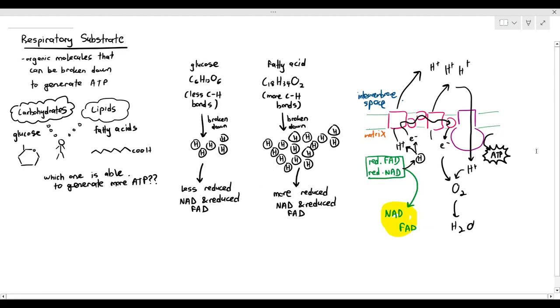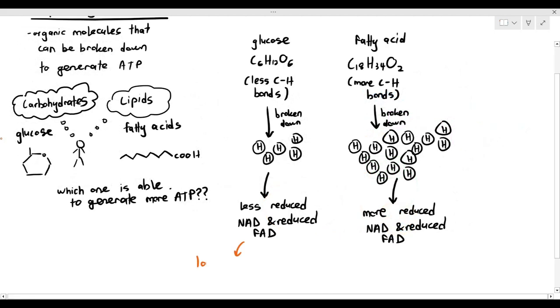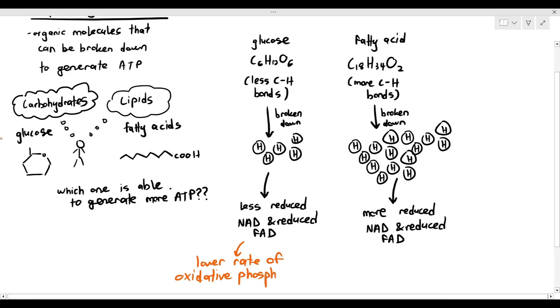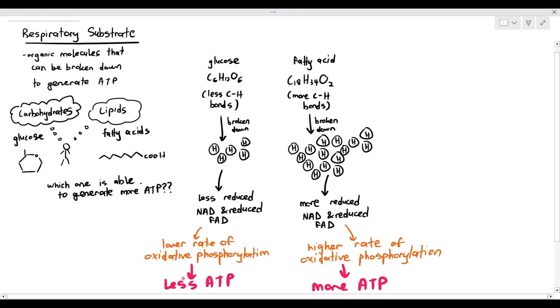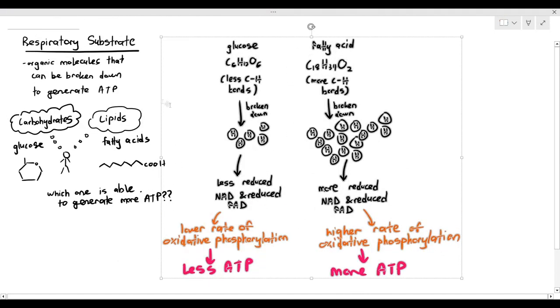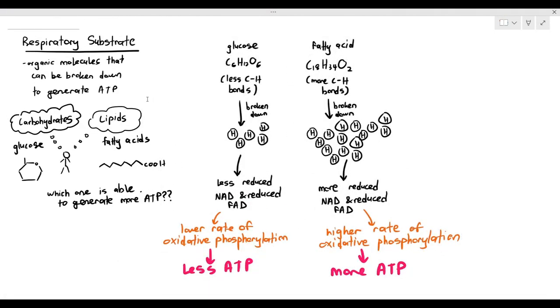Because fatty acids, when broken down, will give more reduced NAD and reduced FAD, higher rates of oxidative phosphorylation happen, and more ATP are produced. In the exam, all you have to say is: fatty acids have more carbon-hydrogen bonds. When they are broken down, they will release more hydrogen atoms, which will give you more reduced NAD and reduced FAD, which in turn has a higher rate of oxidative phosphorylation and therefore produces more ATP in the process.